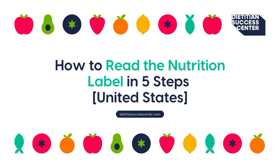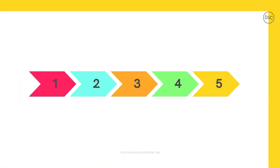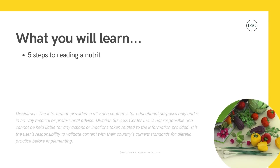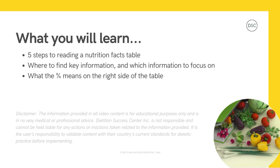How to read the nutrition label in five steps. Nutrition labels, and specifically the nutrition facts table, can help you compare packaged food and drink products and make the best choices for your nutrition needs. In this video, we will cover the five steps to reading a nutrition facts table, including where to find key information, which information we want to focus on, and what the percentage means on the right side of the table.